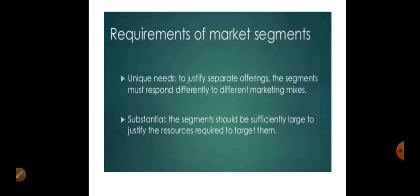For example, if you own a company manufacturing towels, looking at infants, teenagers, and old aged people — all require the same product, so there is no need to segment. But in the case of clothing, infants wear a certain level of clothing, teenagers follow fashion trends, and old aged people wear modest clothes — here you can subdivide your clothing company market into three segments.